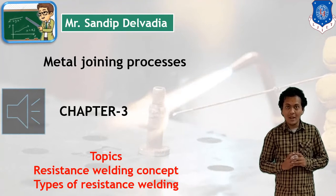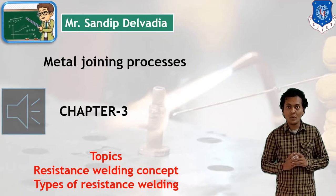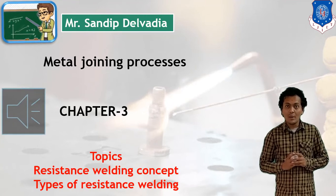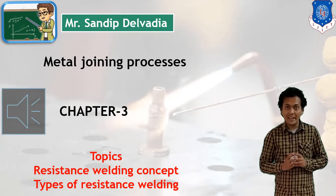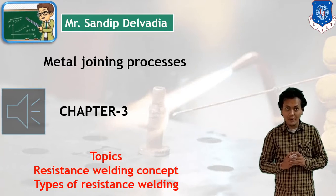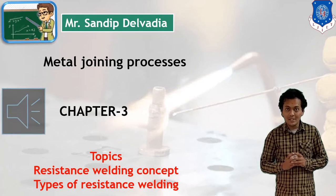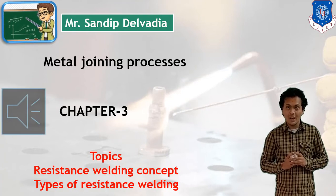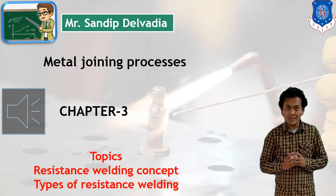In the Metal Joining Processes, our purpose is to join two metals or two parts with help of heat generated. Our purpose is to generate heat with help of different mechanisms and concepts, and this heat can be utilized for joining, or say for fusion and melting of two metals, so that we can join two metals together.